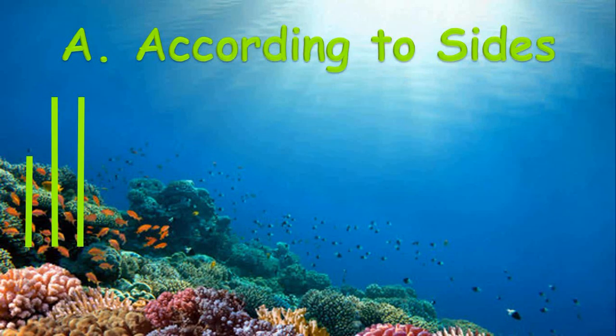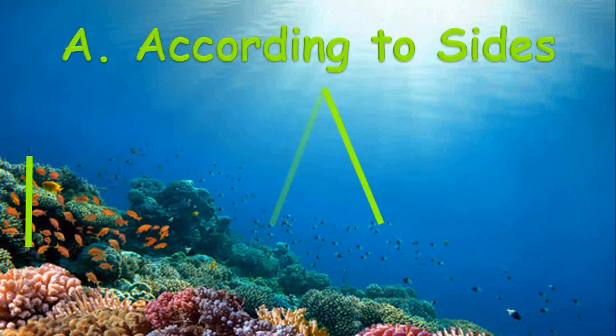How about these lines? What do you notice? Correct, two lines are the same length. And if we use them as sides of the triangle, we can say that the triangle has only two of the same length of sides and we'll call it the isosceles triangle.